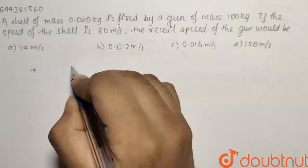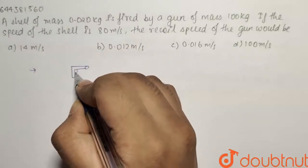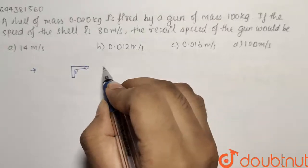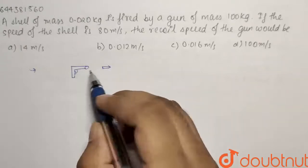So basically what is happening, you have a gun here and you are firing a bullet from it. If you are firing a bullet, then if you consider the whole system that is bullet plus gun as a whole system...